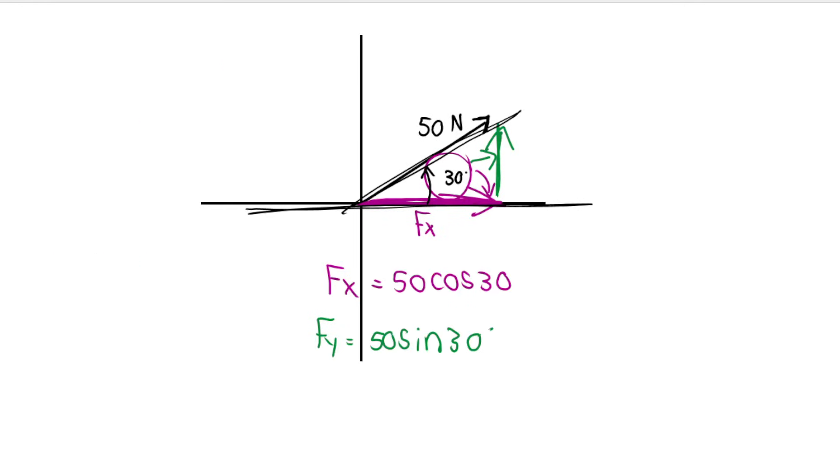But remember in the previous examples, to get the x component, we use cos. Because it was all about where the angle was in the diagram or on the diagram.